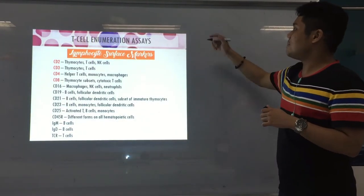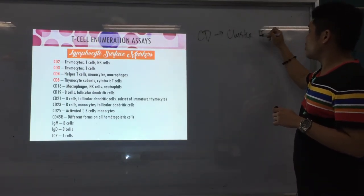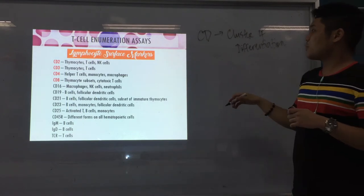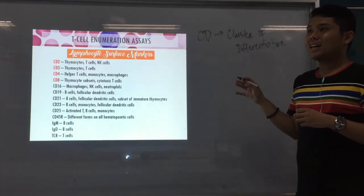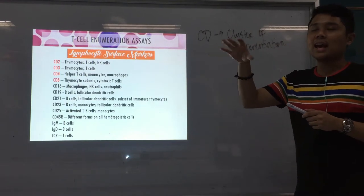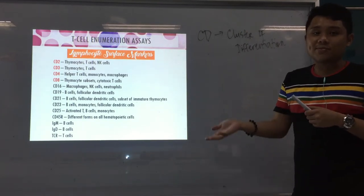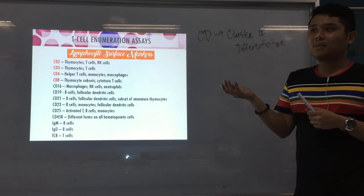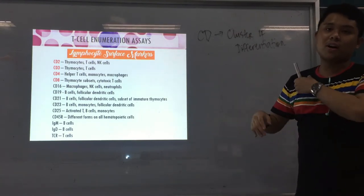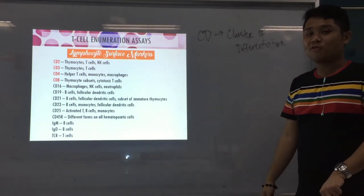What does CD mean? CD stands for 'cluster of differentiation' — or it can also be called 'cluster of designation.' These are surface markers usually found on your lymphocytes — T-cells or B-cells. We use these CD markers to identify them, especially in diseases like leukemia and other lymphomas, to identify which cells are proliferating.